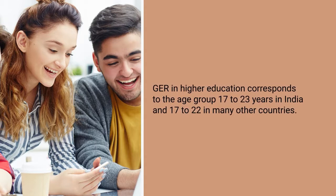In our country, we calculate the gross enrollment ratio in higher education in terms of the actual age group that should have ideally been in higher education, namely 17 years to 23 years.